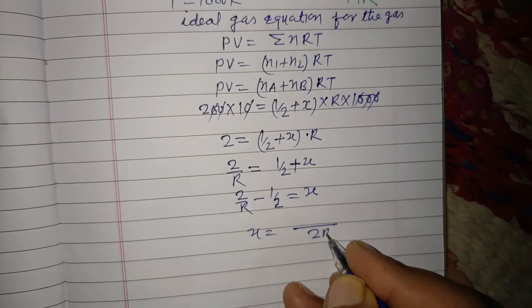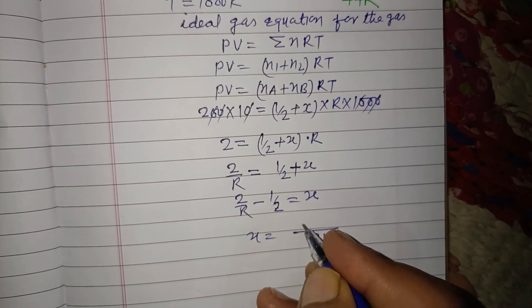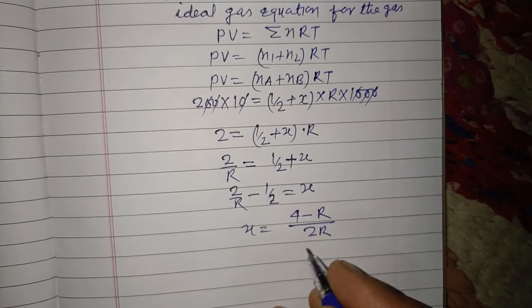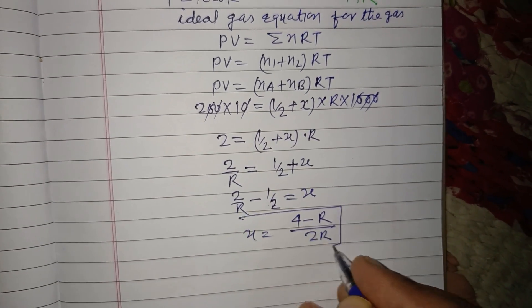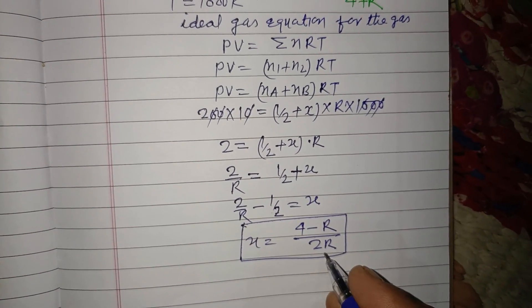Therefore x equals, taking LCM 2R, we get (4 minus R) upon 2R. So the value of x is (4 minus R) upon 2R,